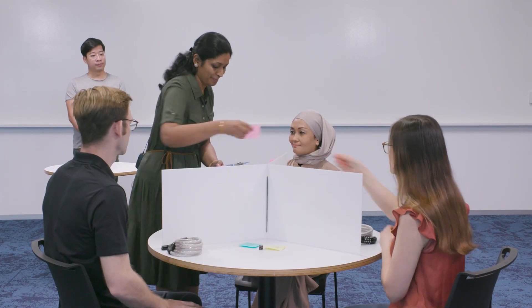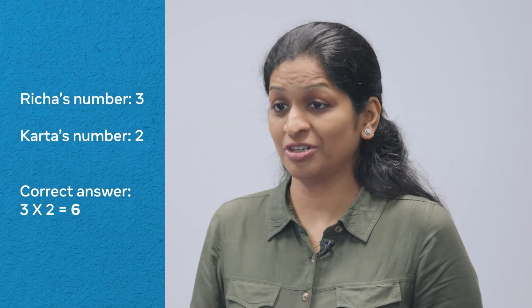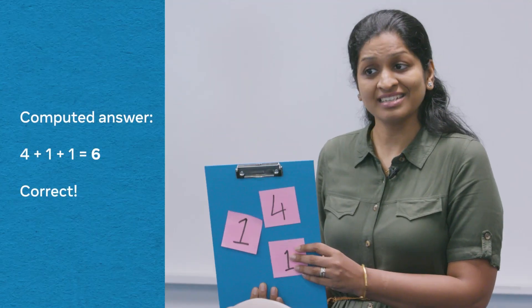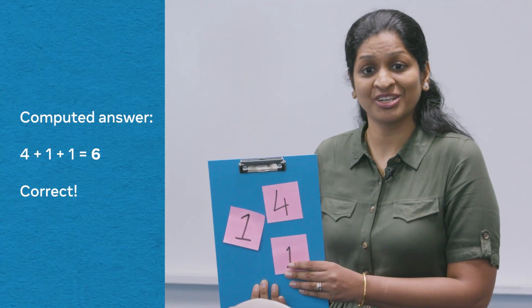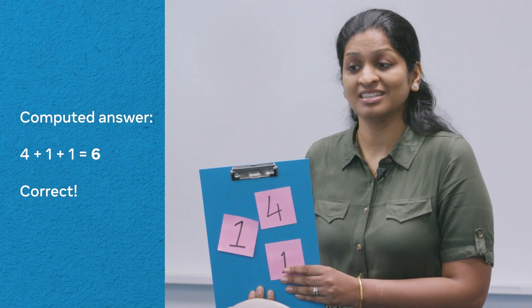Just hand me your numbers and I'll check if you got the right answer. My number was three. My number was two. Three times two — that's six. If you got the right answer, this should be a secret sharing of six. It is actually a secret sharing of six because it adds up to six.